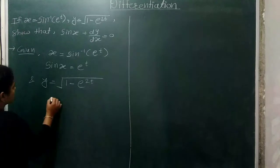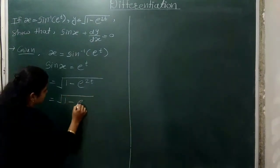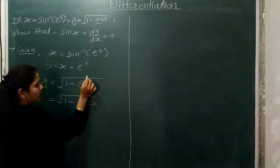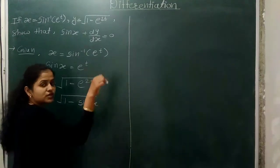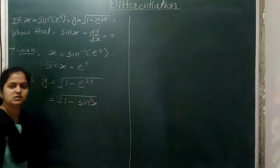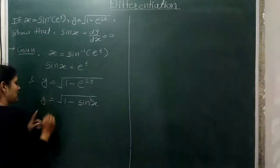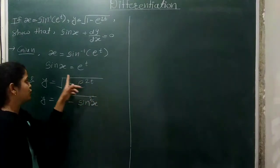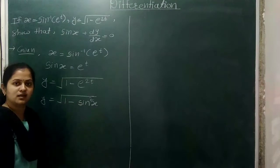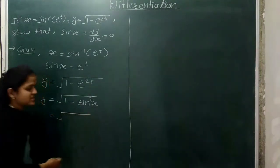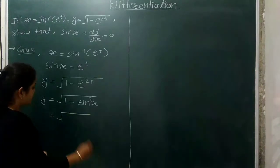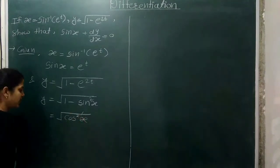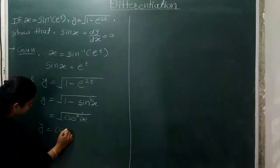Now substituting sin x for e raised to t in y: y equals under root of 1 minus e raised to 2t, which becomes under root of 1 minus sin squared x. By the fundamental identity, 1 minus sin squared x equals cos squared x. The square and square root cancel, giving y equals cos x.